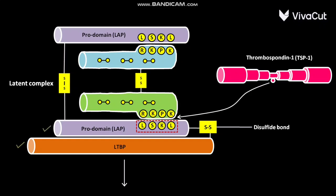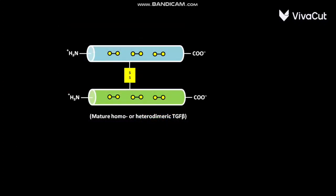As a result, mature homo or heterodimeric TGF beta is released. This mature homo or heterodimeric TGF beta is active in nature. One disulfide bond connects two TGF beta monomers.